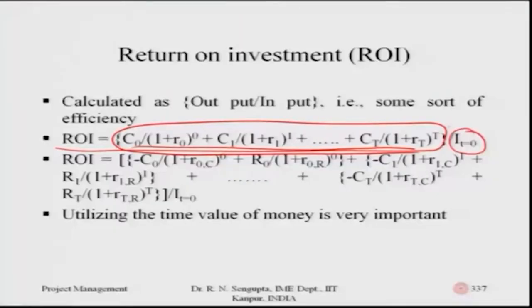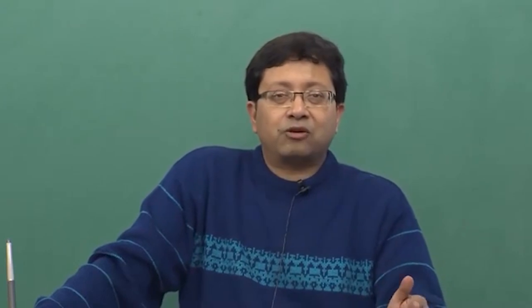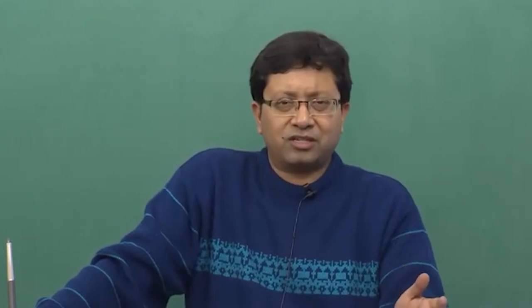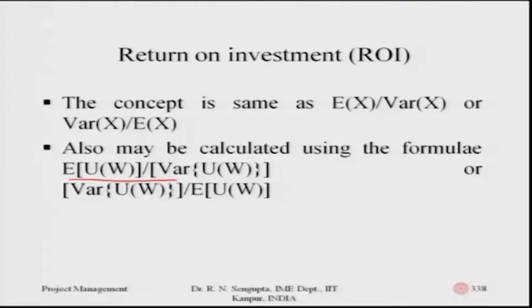Utilizing the time value of money is very important for finding return on investment. This concept is equivalent in some sense to the ratio of expected value to variance, or variance to expected value used in the opposite sense. We may also be interested in calculating the expected value of utility and variance of utility — finding the net worth of a decision from a project, a gamble, or any event, and ranking accordingly.